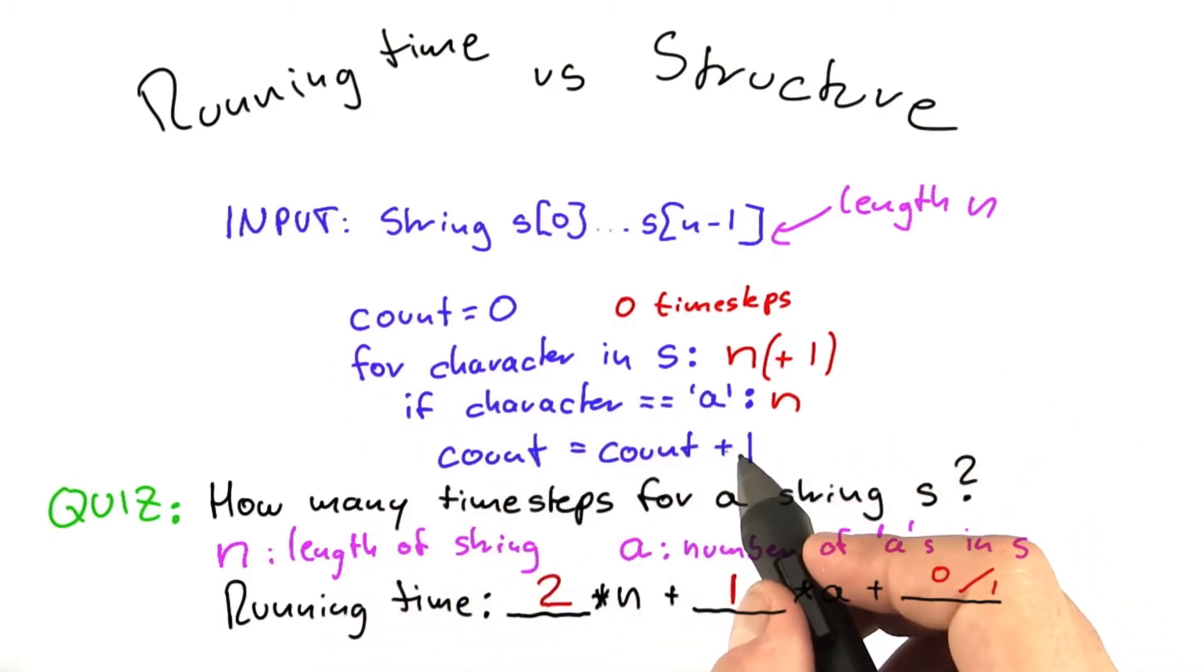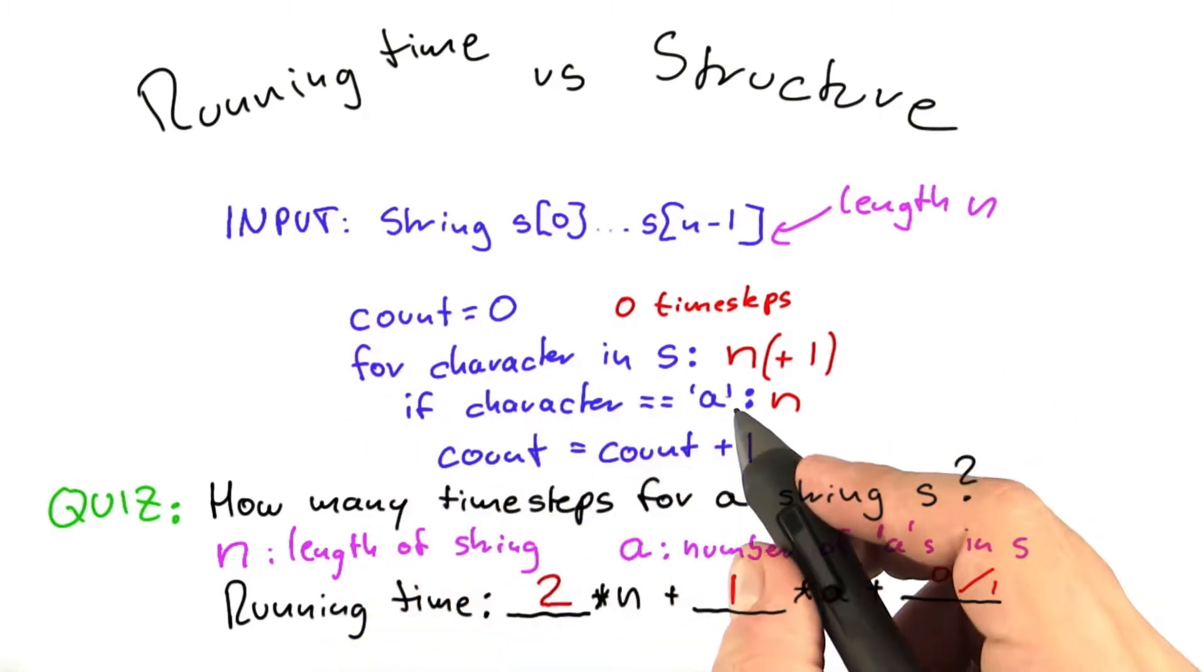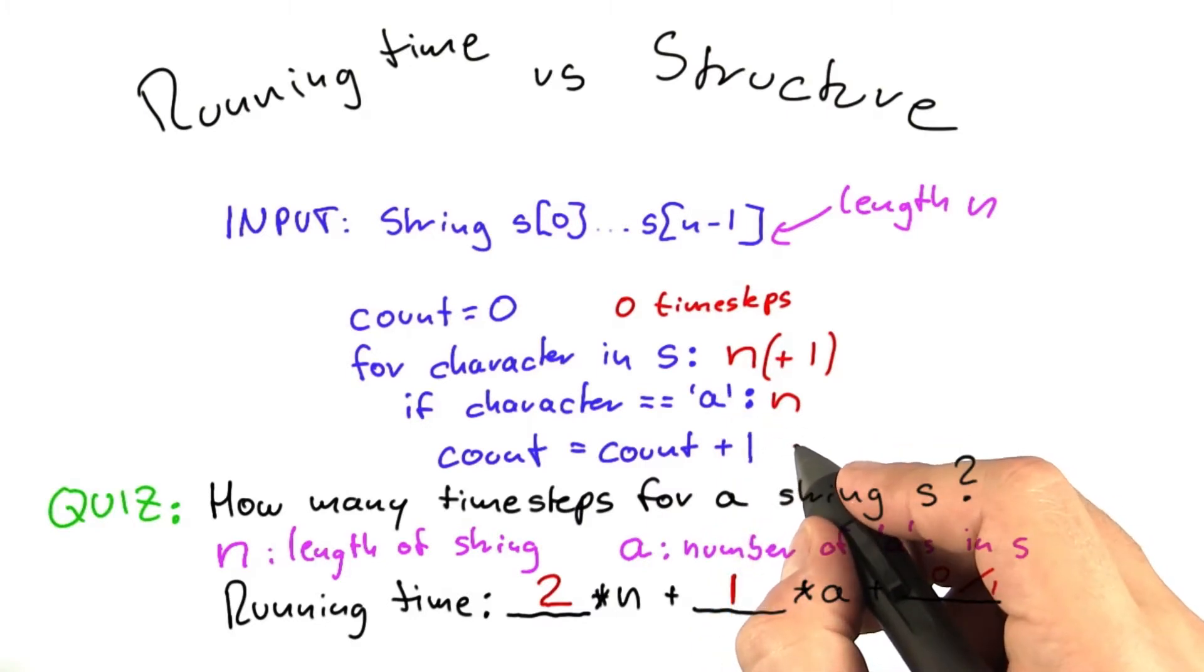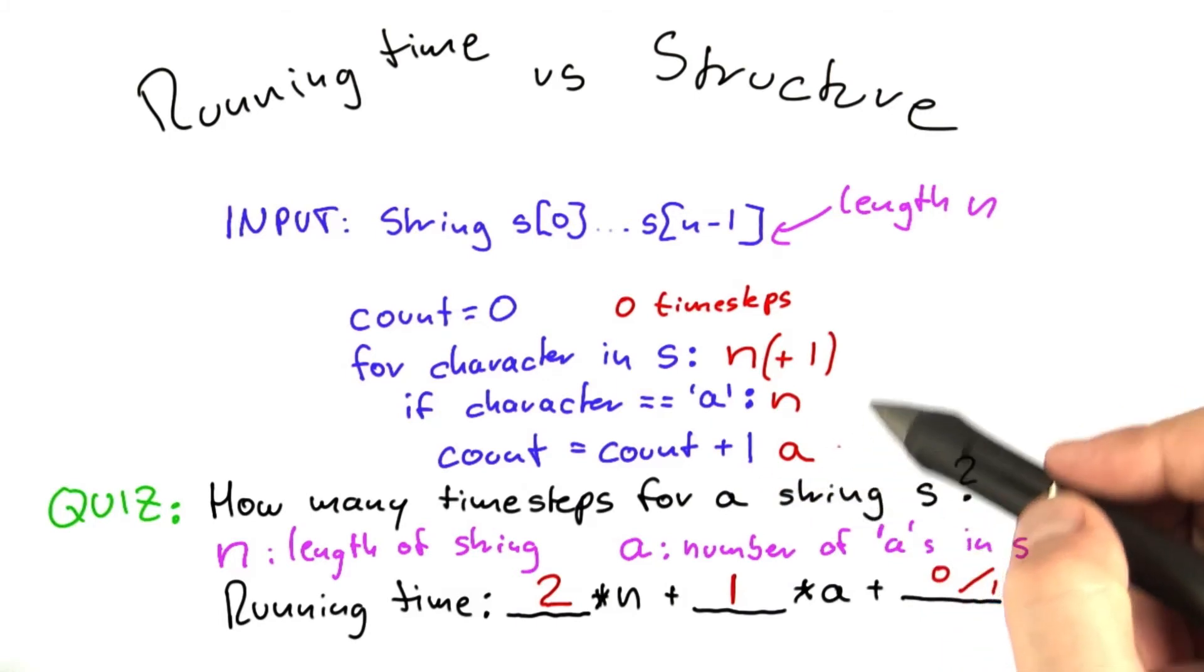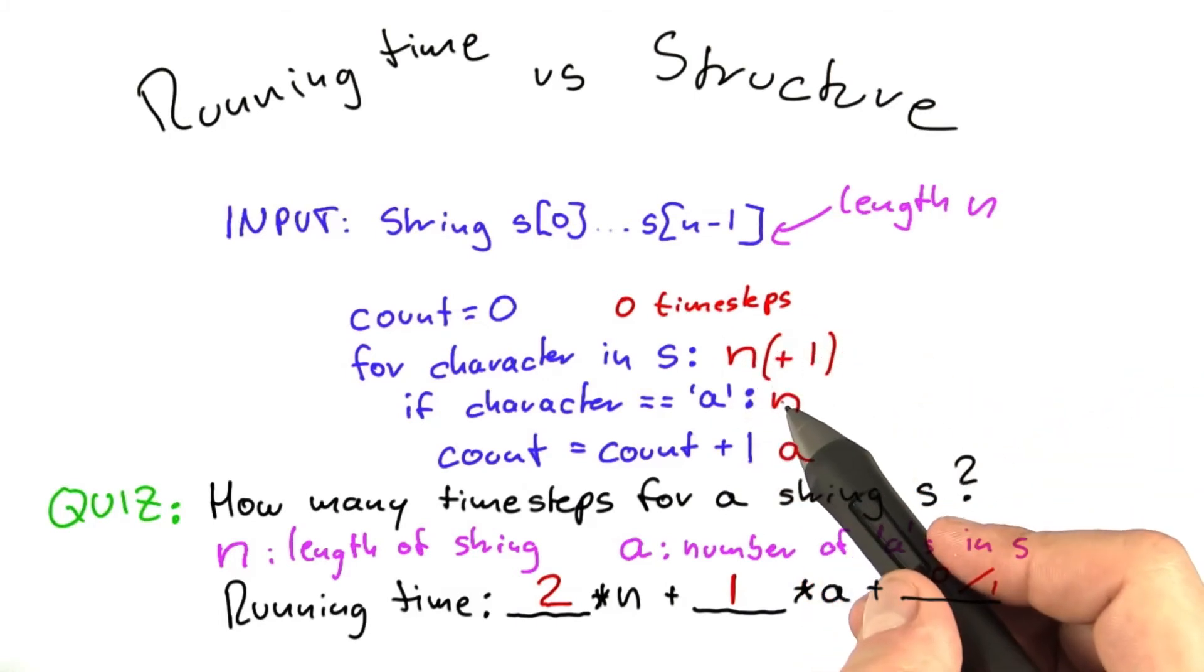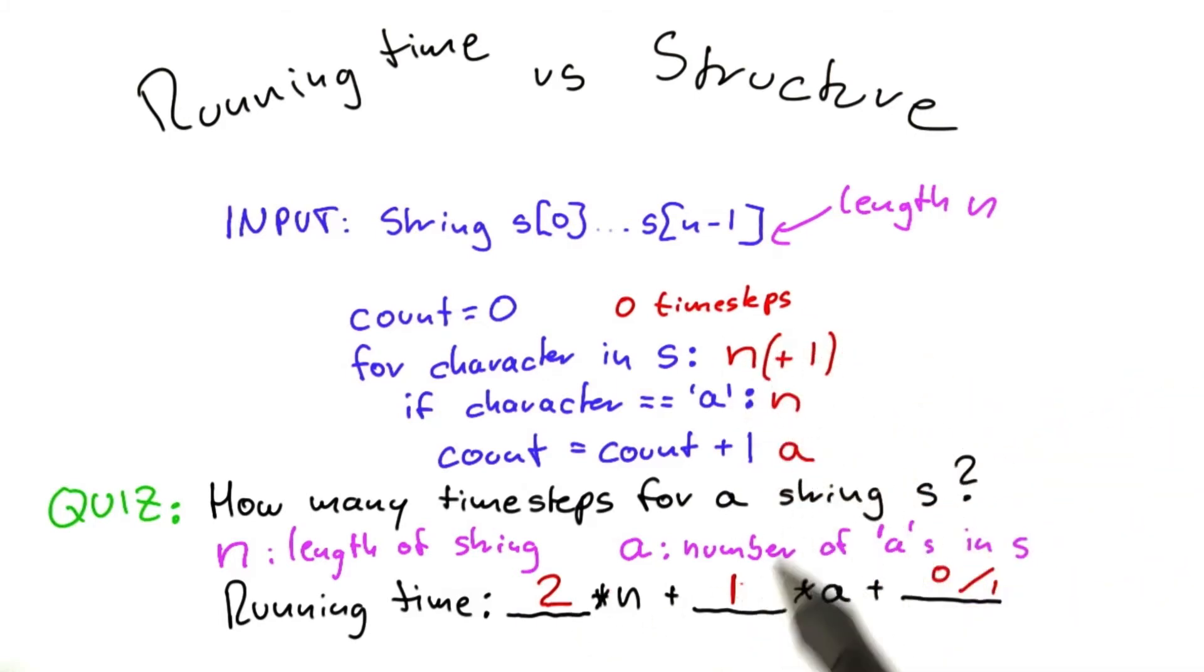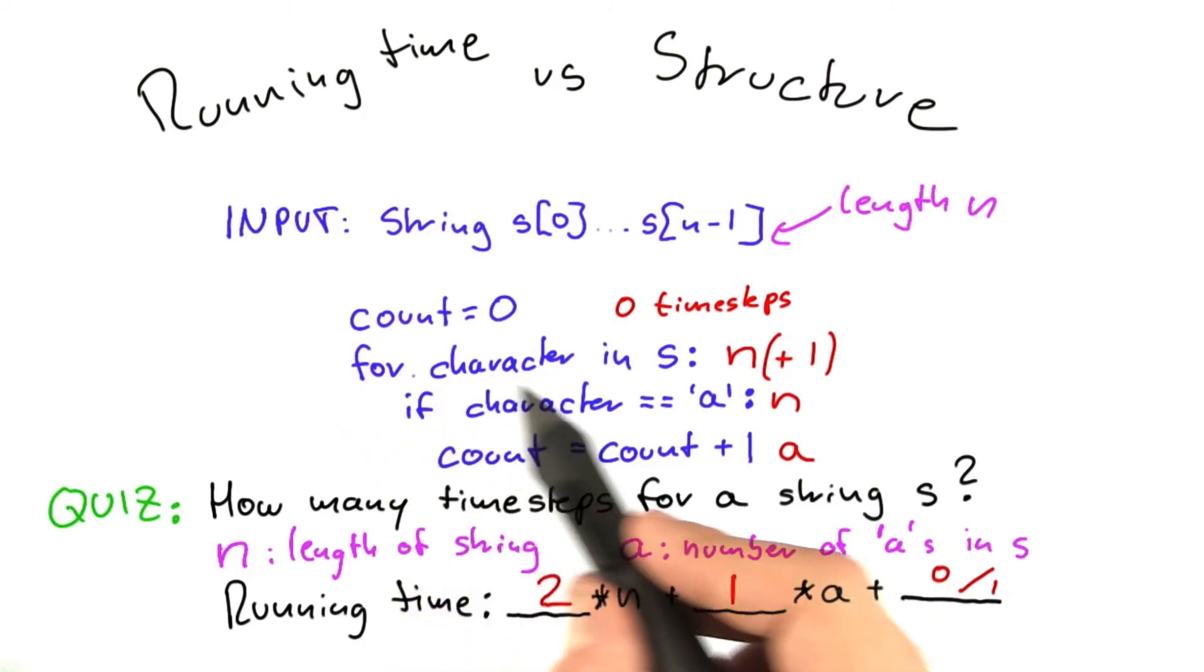And finally, the counter is always increased when the algorithm encounters an a. So this line here is executed exactly a times. And if you sum up all of these, you get 2n plus 1 times a, and depending on how you count this line, you either get a 0 or 1 here.